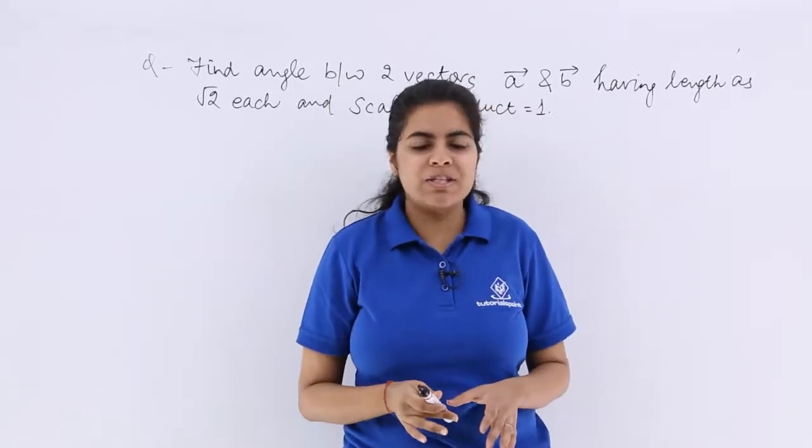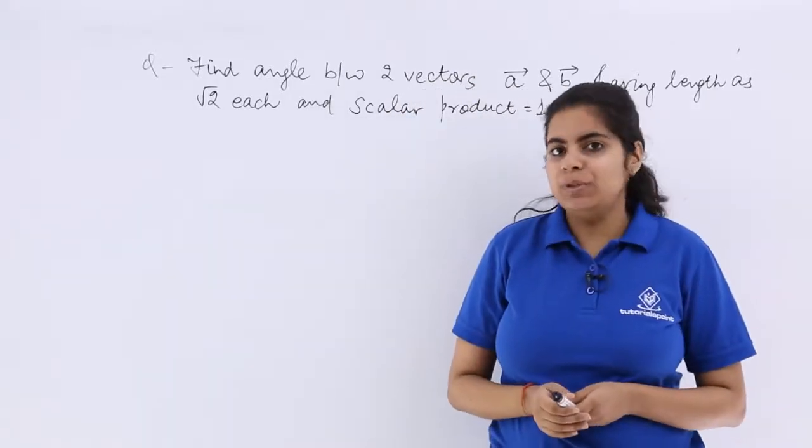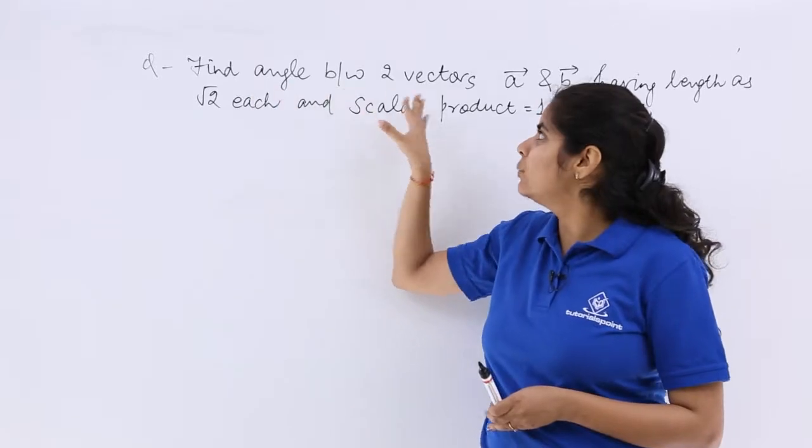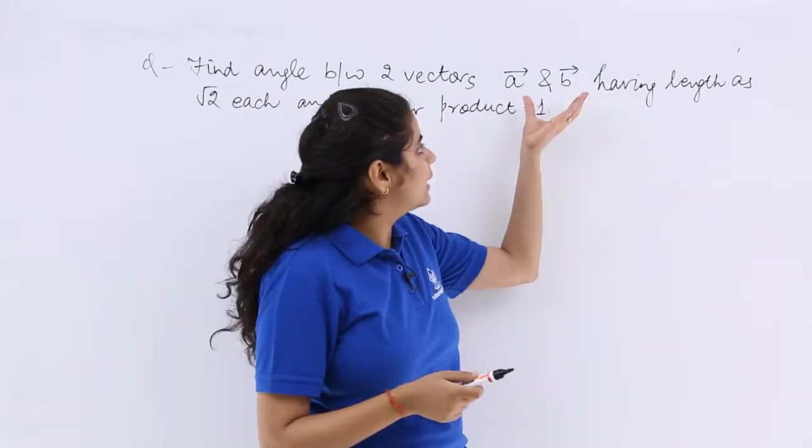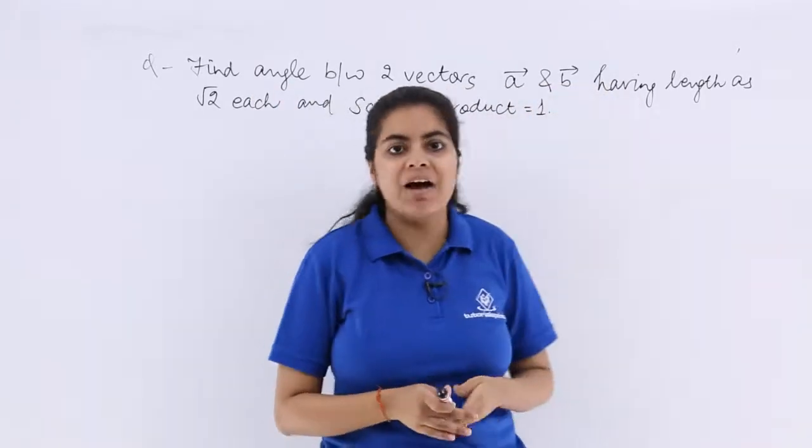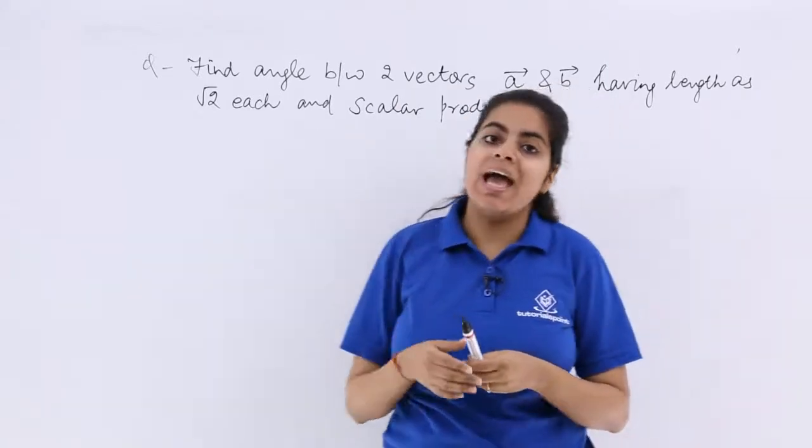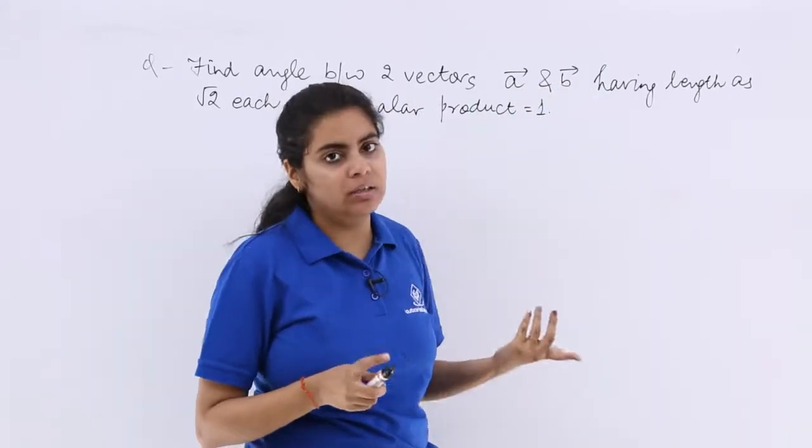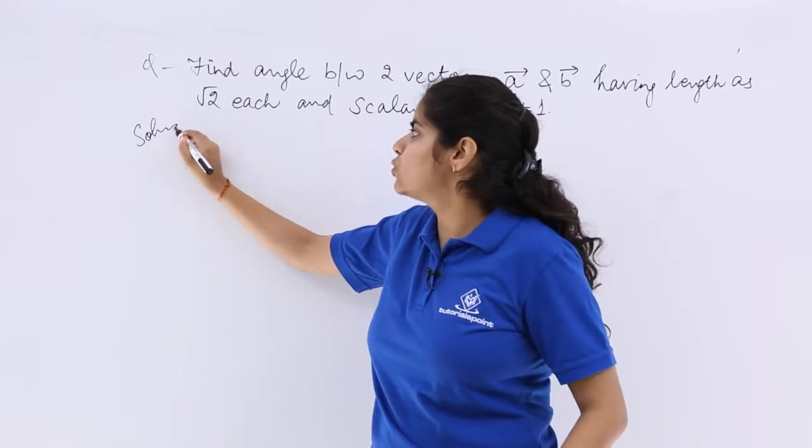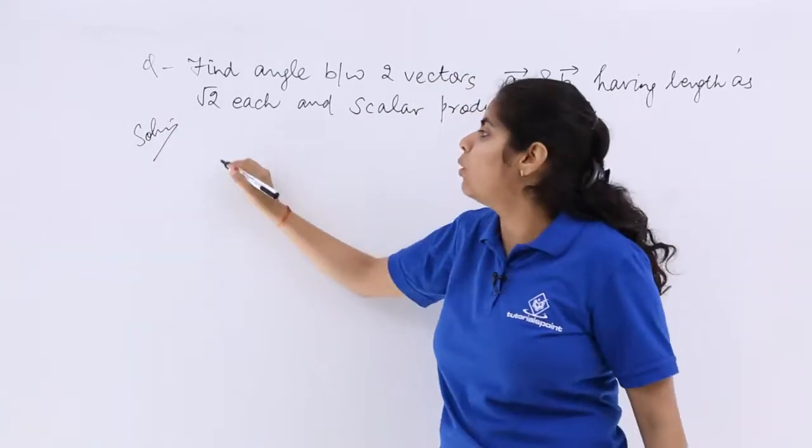Now let's see a very simple question suggesting the angle between two vectors. Find the angle between two vectors, a and b, having length as root 2 each and the scalar product is 1. So very simple question. This is just to make sure that you remember the formula.